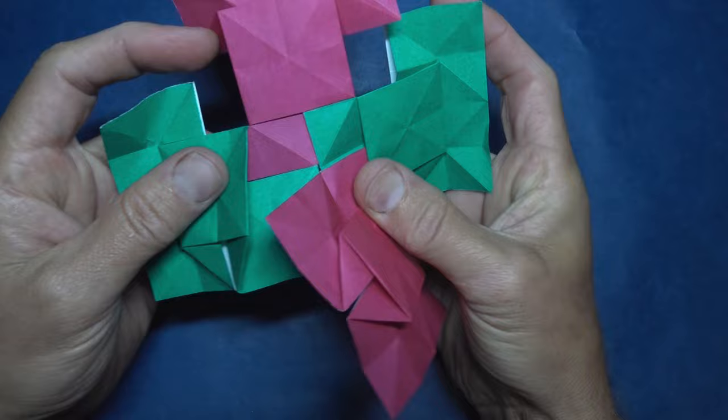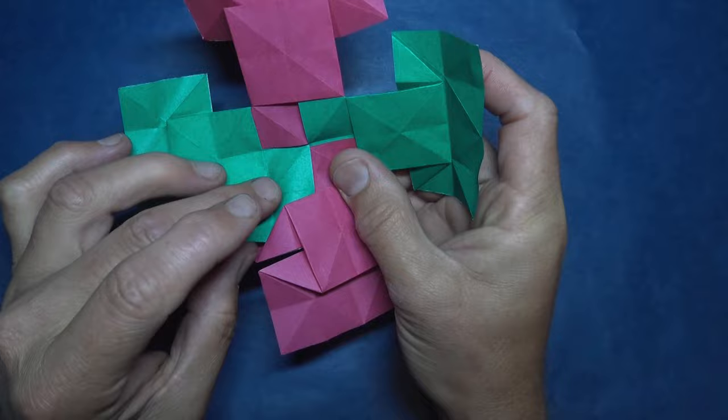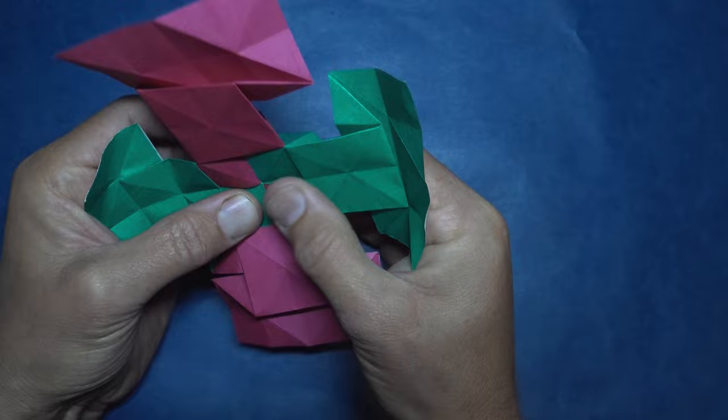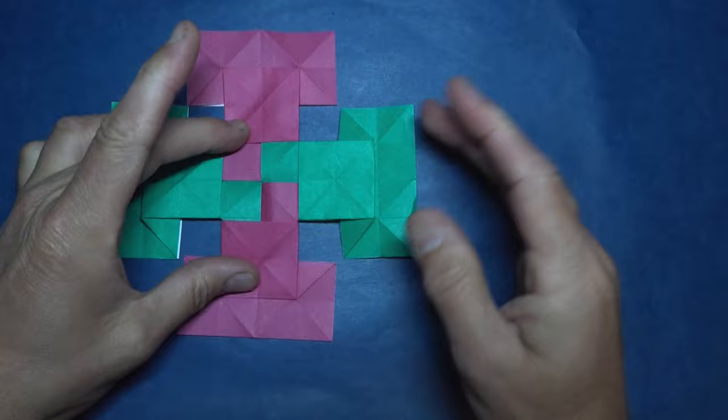And now take these two flaps and switch their place. So this one goes on top like that. And insert it underneath there. Push it together. And lock it. So these are locked. And now turn it over.